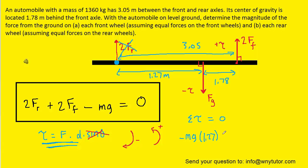And then we'll add the torque produced by this force over here. So we have 2Ff multiplied by the distance to the pivot, which is 3.05. Now that torque was positive, so we can leave that positive sign there. And then we set that equal to zero.